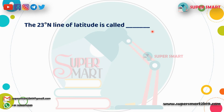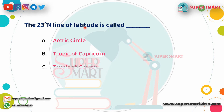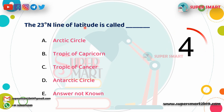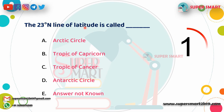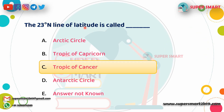Next question: The 23-degree North line of latitude is known as what? Options: Arctic Circle, Tropic of Cancer, Tropic of Capricorn, or Antarctic Circle? Answer is Tropic of Cancer.